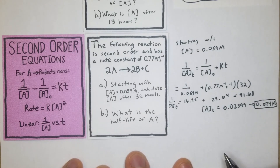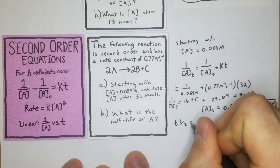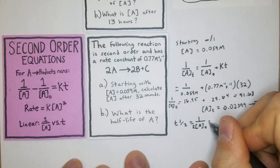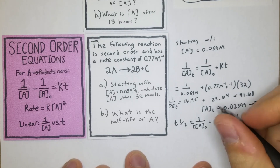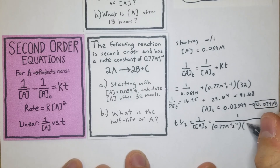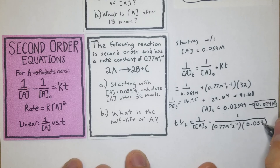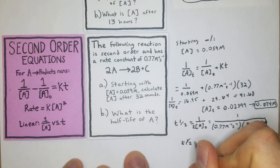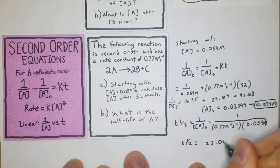For part B, the half-life: we plug directly into t½ = 1 / (k × [A]₀). That's 1 / (0.777 M⁻¹s⁻¹ × 0.059 M). The half-life equals 22.01 seconds.